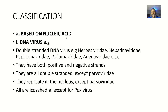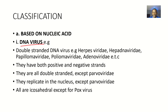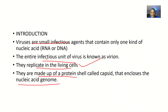Classifications of viruses — let's classify them based on nucleic acid. Based on nucleic acid, we have viruses that could either have DNA as their genome or RNA as their genome. For the DNA viruses, we have double-stranded DNA viruses. The examples are Herpesviridae, Hepadnaviridae, Papillomaviridae, Polyomaviridae, and Adenoviridae.